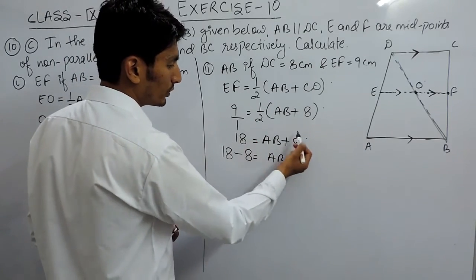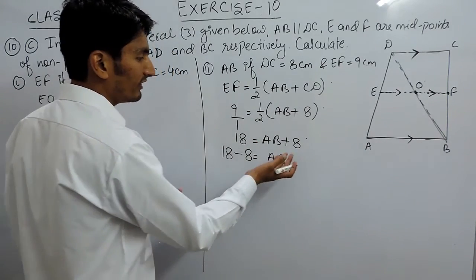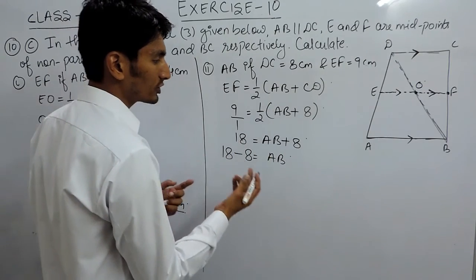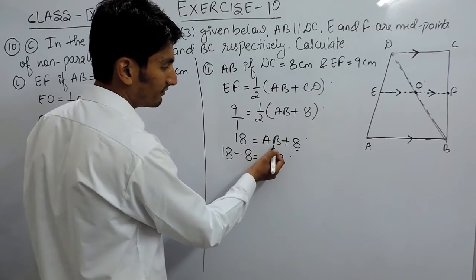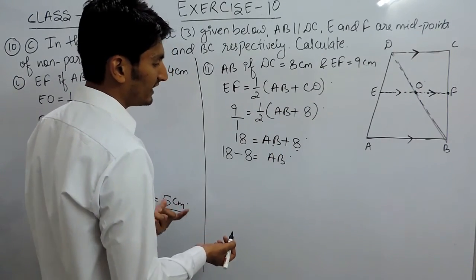To solve these kind of equations, we have to shift all the variables to one side and all the constants to another side. The numbers are called constants and the value which we have to find is called variable.